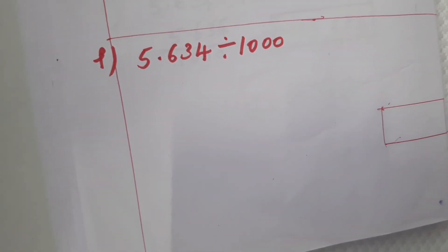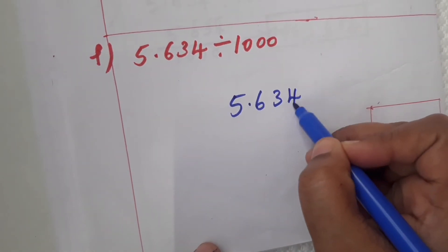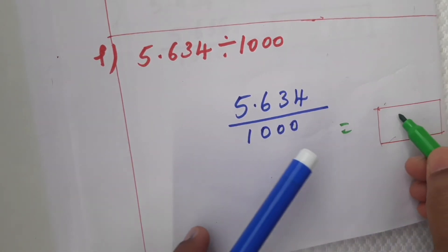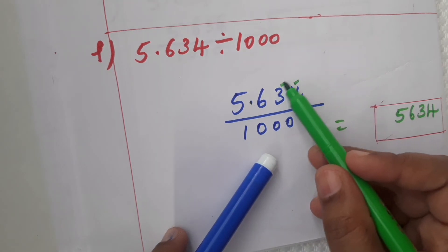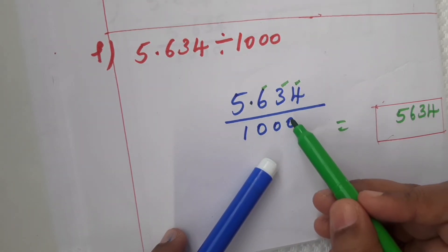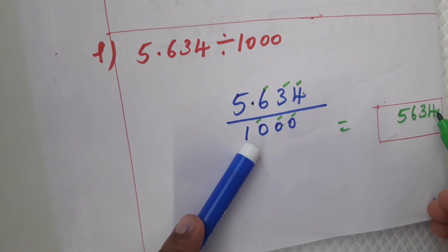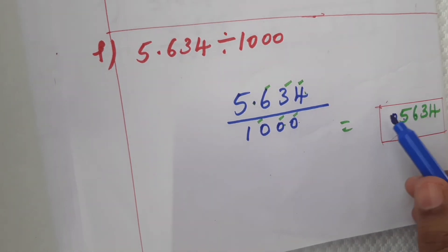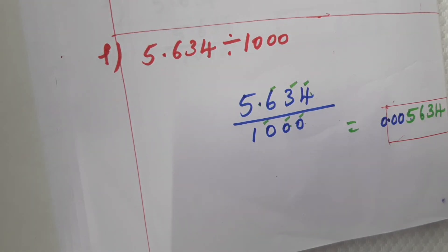F: 5.634 divided by 1000. Write the numerator as 5634. After the decimal point there are 3 numbers, and divisor 1000 has 3 zeros — total 6 digits. From the right count 1, 2, 3, 4 — only 4 digits, so we need 2 leading zeros. The answer is 0.005634.